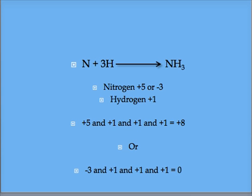When an element has two valence numbers, you should test both of them. Using a valence of positive five for nitrogen, we get plus five and three plus ones from hydrogen for a total of plus eight. This will not react.